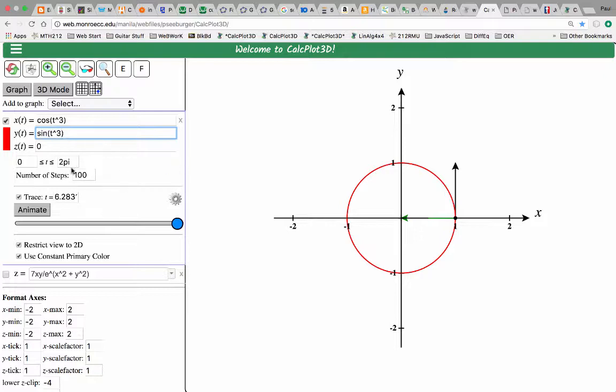And now let's say we want to go from zero to the cube root of two pi. So we'll put parentheses around this and raise it to the one-third power. Press enter.